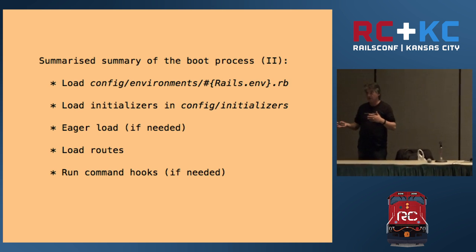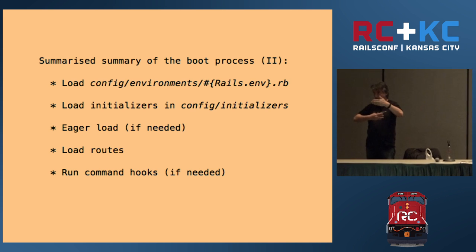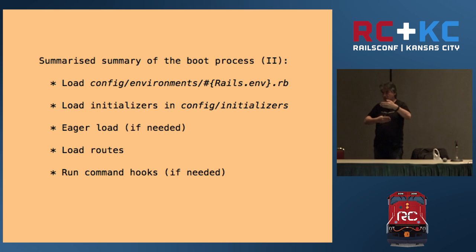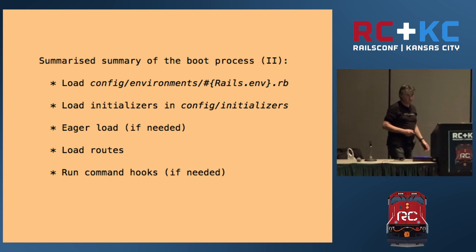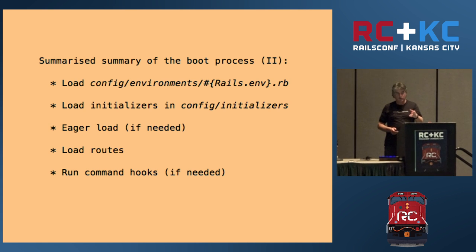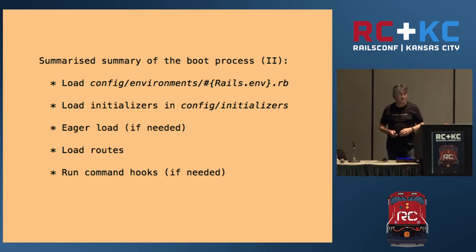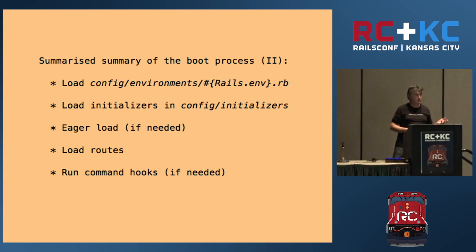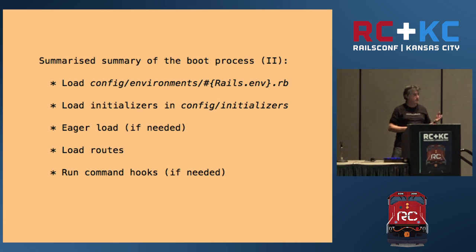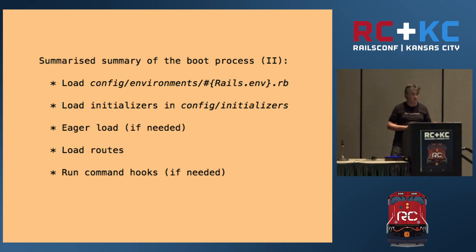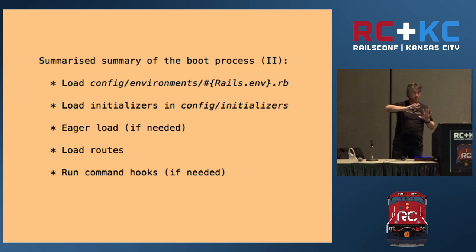After that, the initializers in the application engines are run — first application.rb, then development.rb/production.rb, then config/initializers (executed in lexicographic order). After that, if needed, the application is eager loaded, which happens in production mode by default. Rails doesn't hardcode if-development?/if-production? in its codebase. Instead, Rails is parameterized using configuration points. When you generate a new application, development.rb, test.rb, and production.rb set sensible defaults for that environment, and Rails just checks the configuration.